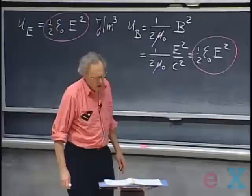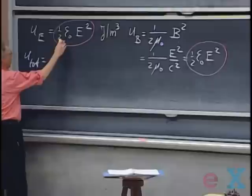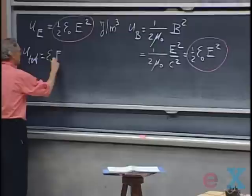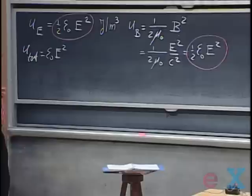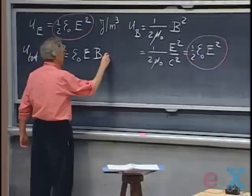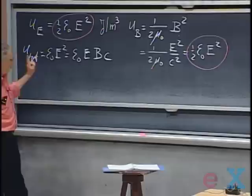The symmetry is absolutely beautiful. The total energy density is the sum of the two, so I double one term: that is ε₀E² joules per cubic meter. I can also write for that ε₀ times E times B times C, substituting E with B times C, giving the same result in joules per cubic meter.